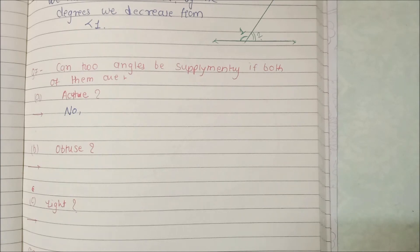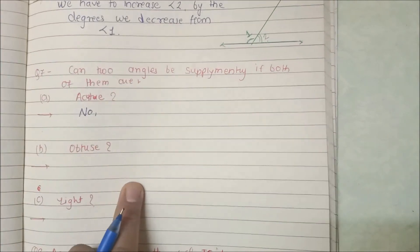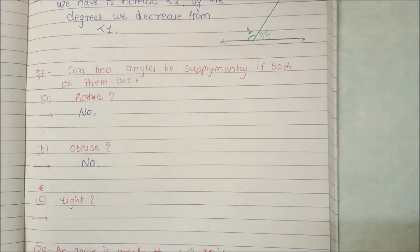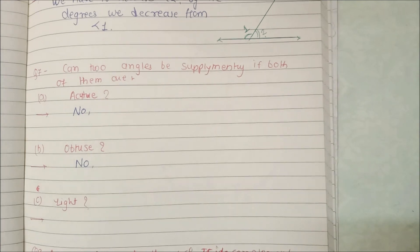Next is obtuse. If both angles are obtuse, that means both are greater than 90 degrees. Even if we take the smallest obtuse value — 91 and 91 — the sum of both angles will already be greater than 180. So their addition will never equal 180, and they cannot form supplementary angles. This answer is also no.